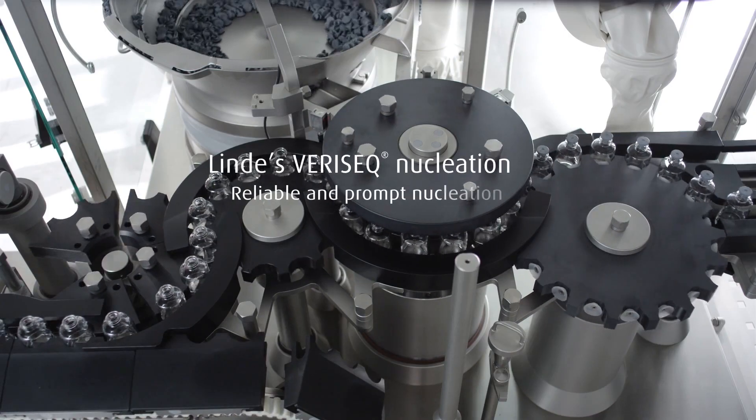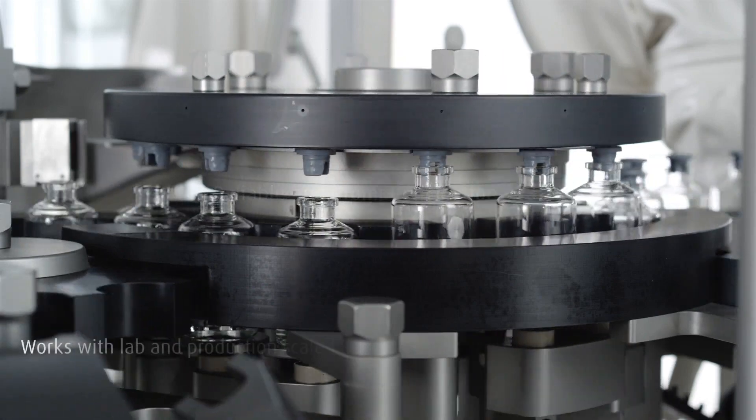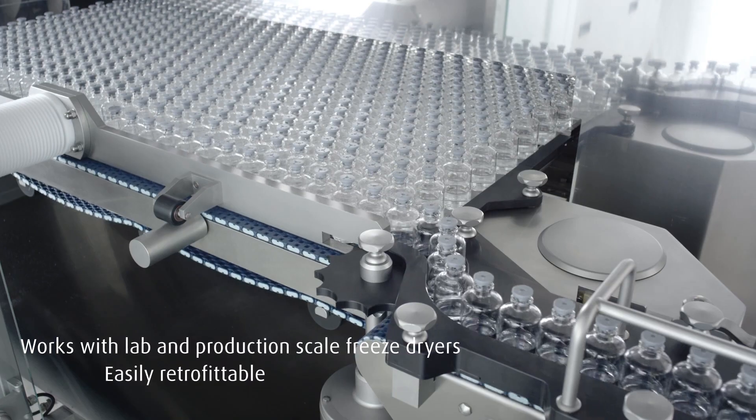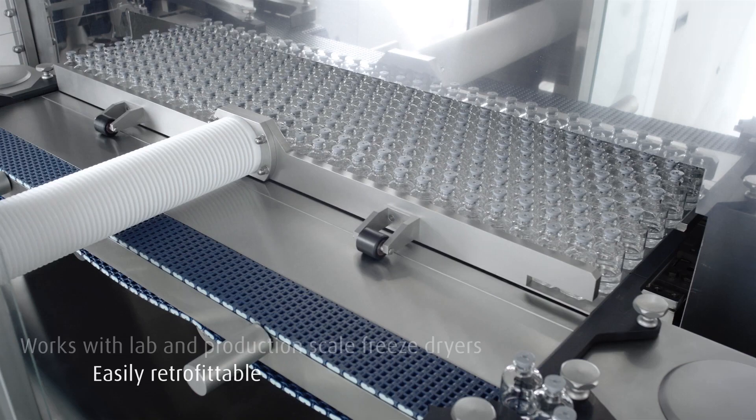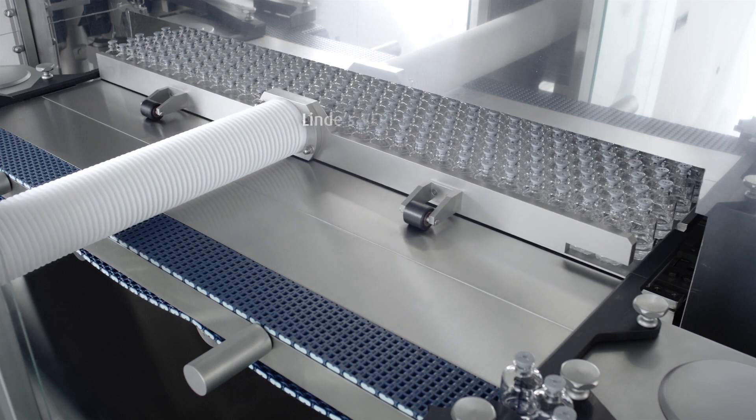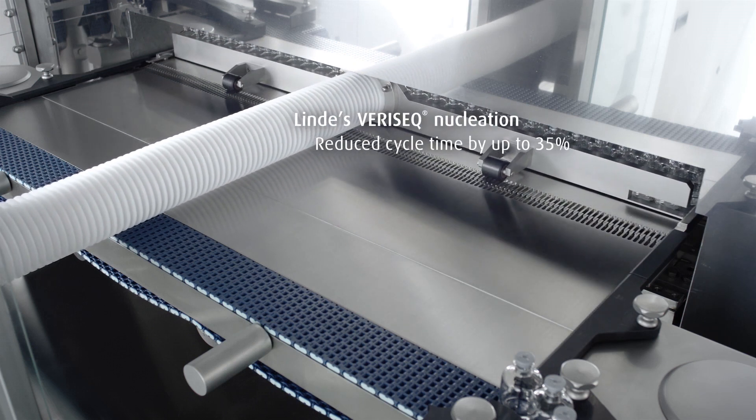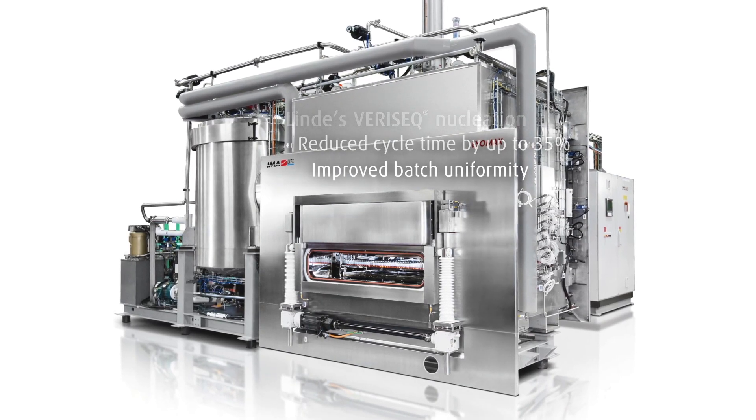This ensures reliable and prompt nucleation of the product at the optimum temperature. Varisec nucleation works with laboratory and production scale freeze dryers and is easily retrofittable to any freeze dryer size. With our Varisec nucleation technology you can reduce overall cycle time by up to 35% and significantly improve batch uniformity.